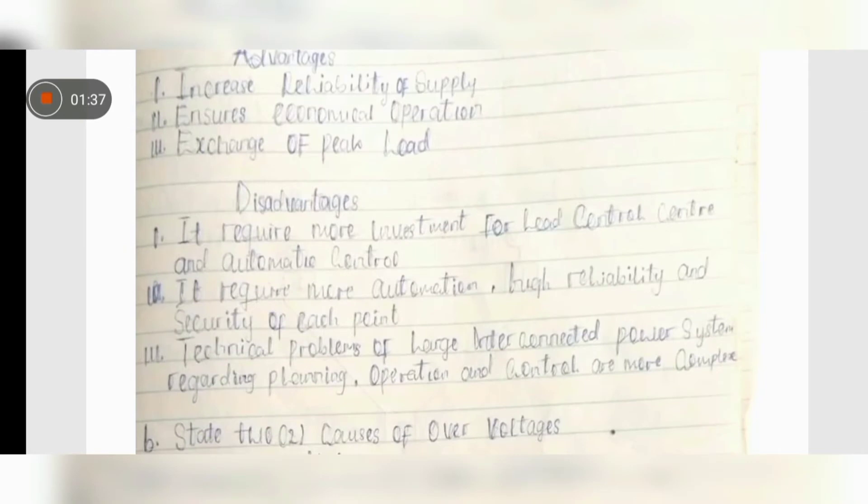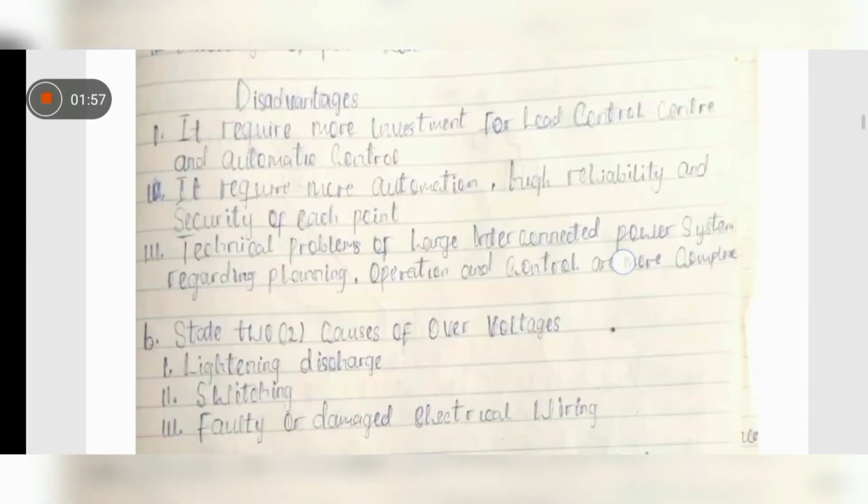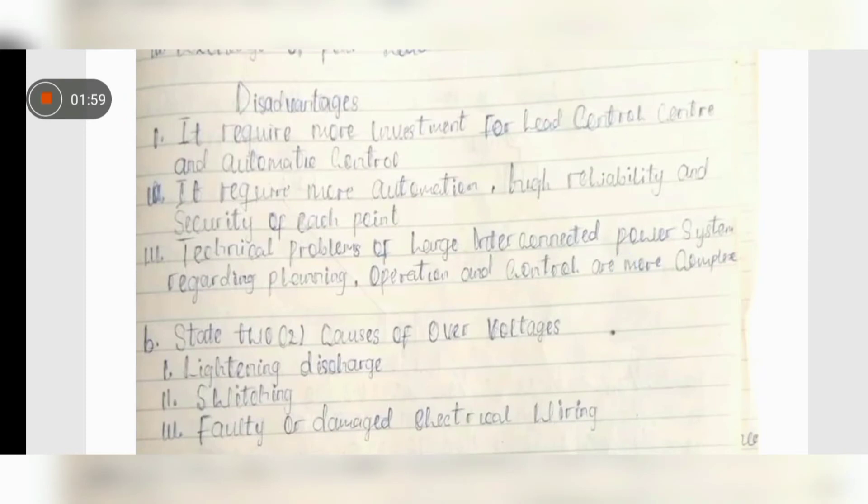That is what they mean by exchange of peak load. And disadvantages: it requires more investment for load control center and automatic control. Number two, it requires more automation and reliability and security of each point. Number three, technical problems of large interconnected power system regarding planning, operation and control are more complex. These things are very simple to understand.